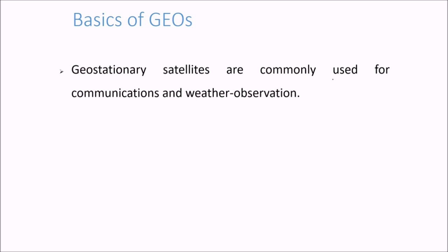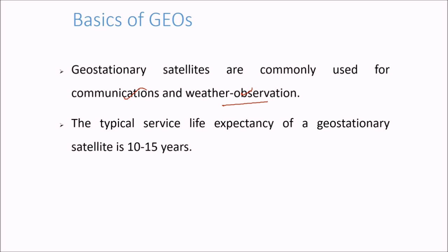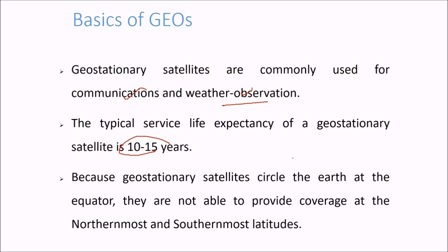Geostationary satellites are commonly used for communications and weather observation. The typical surface life expectancy of GEOs is 10 to 15 years. Since these geostationary satellites circle the earth at the equator, they are not able to provide coverage of the northmost and southmost altitudes.